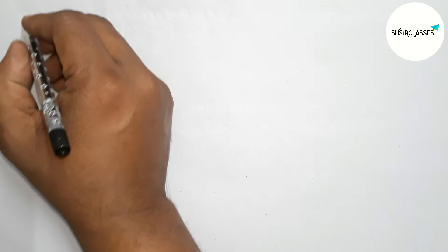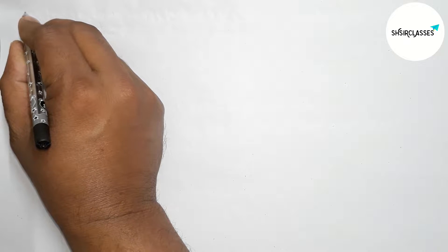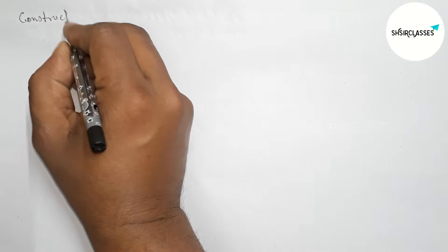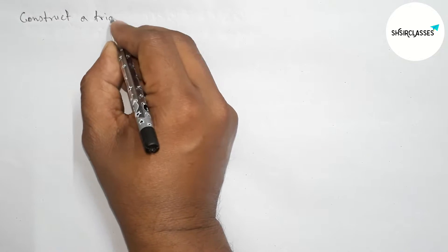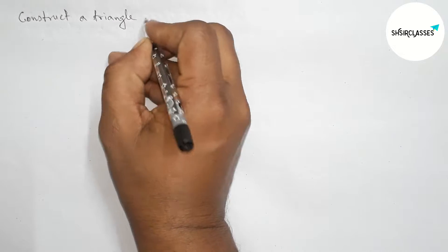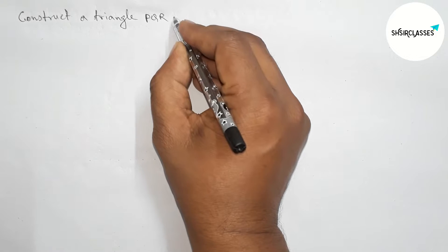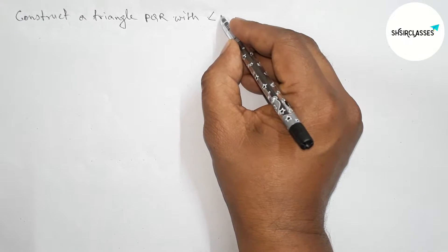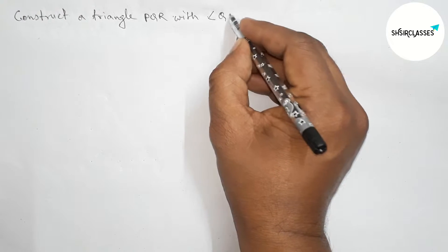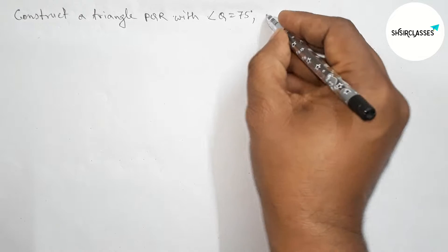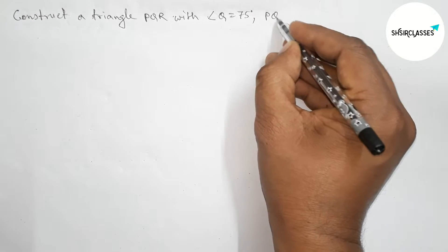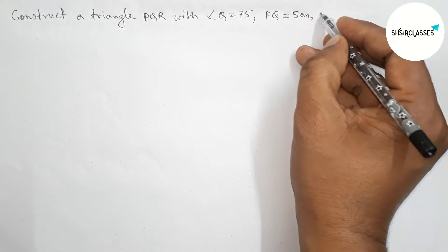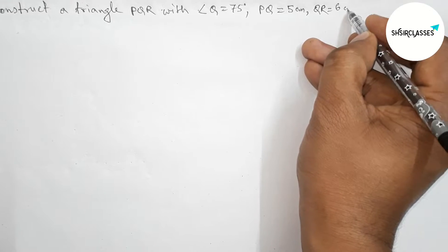Hi everyone, welcome to SI Share Classes. Today in this video, we will learn how to construct a triangle PQR where angle Q is 75 degrees, side PQ is 5 centimeters, and side QR is 6 centimeters. So let's start the video.